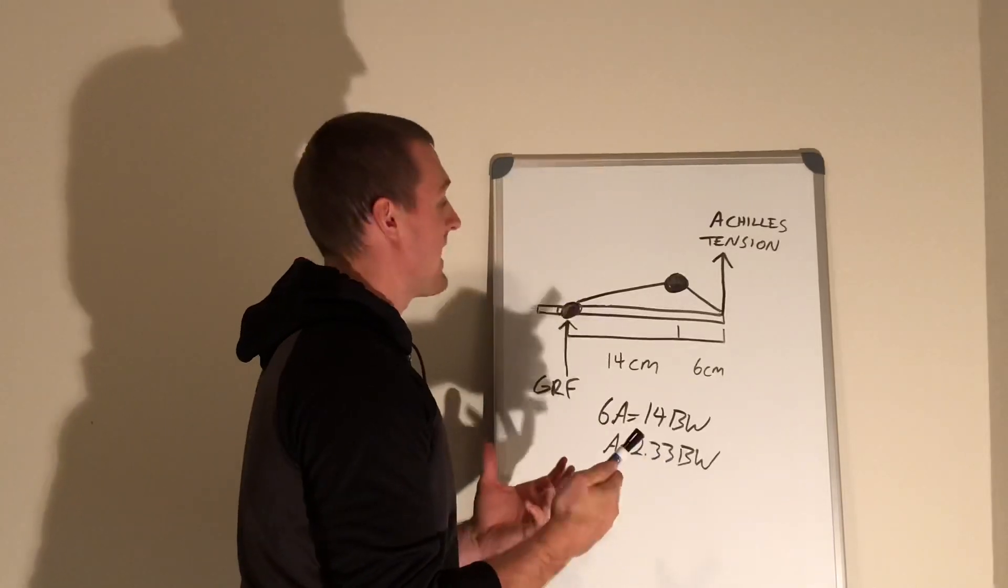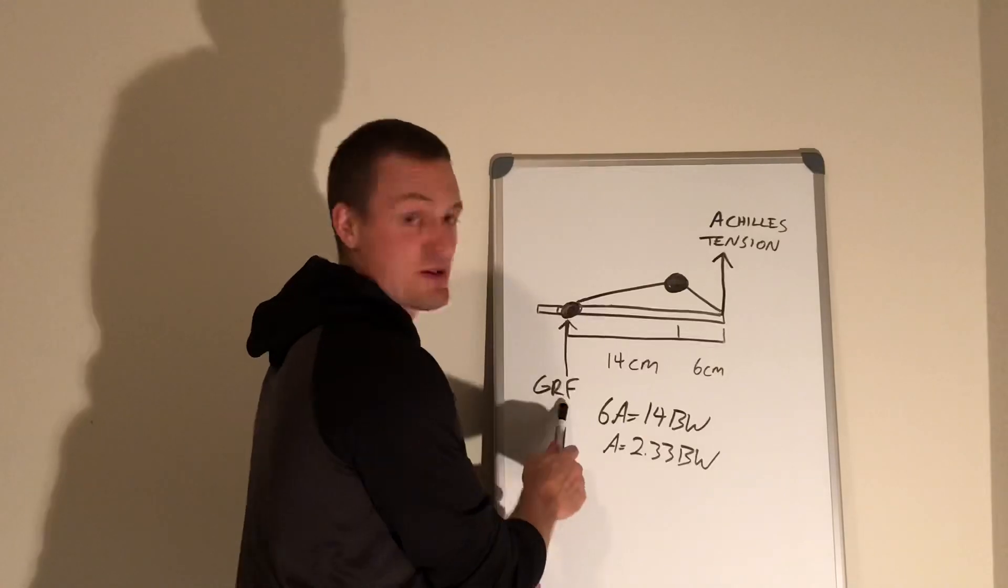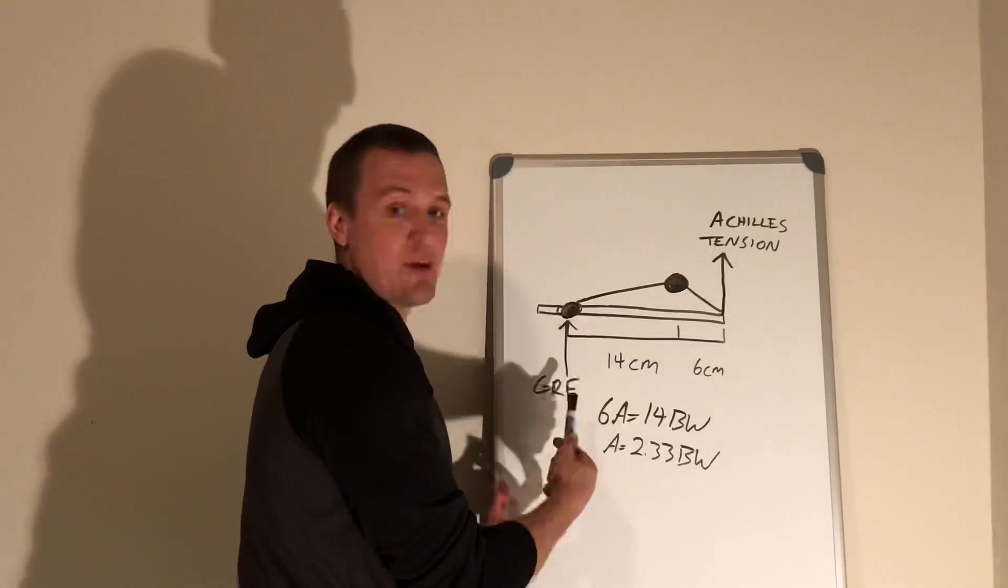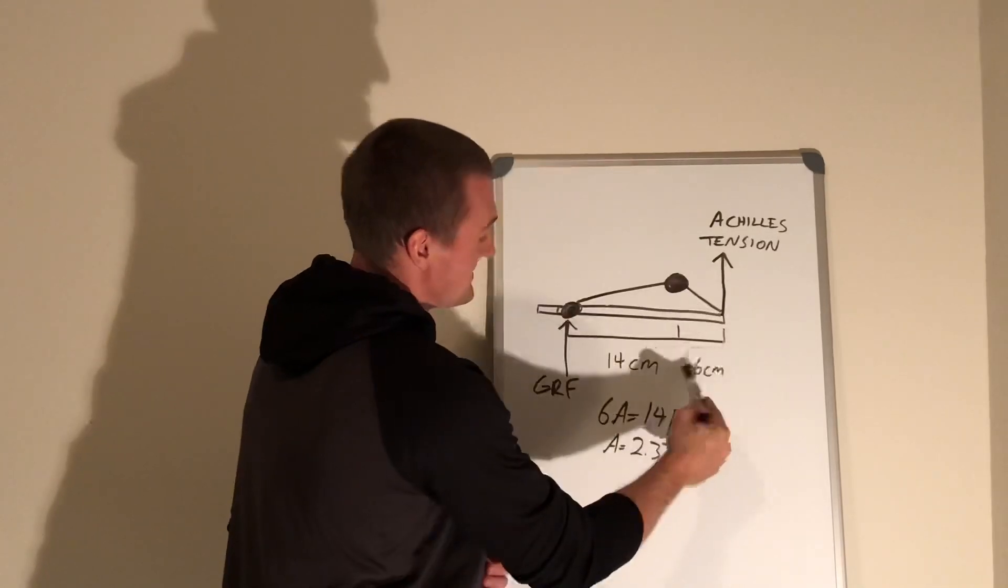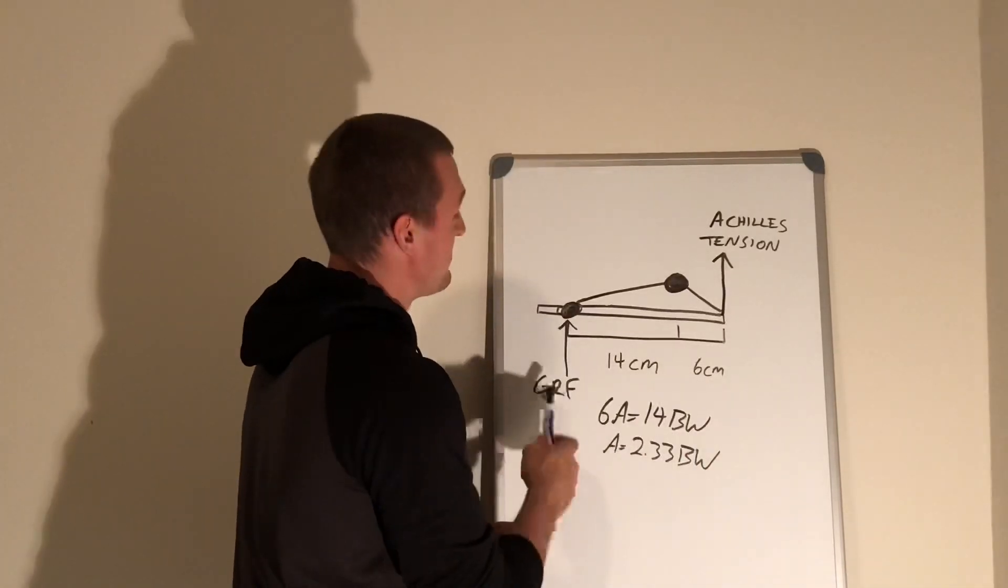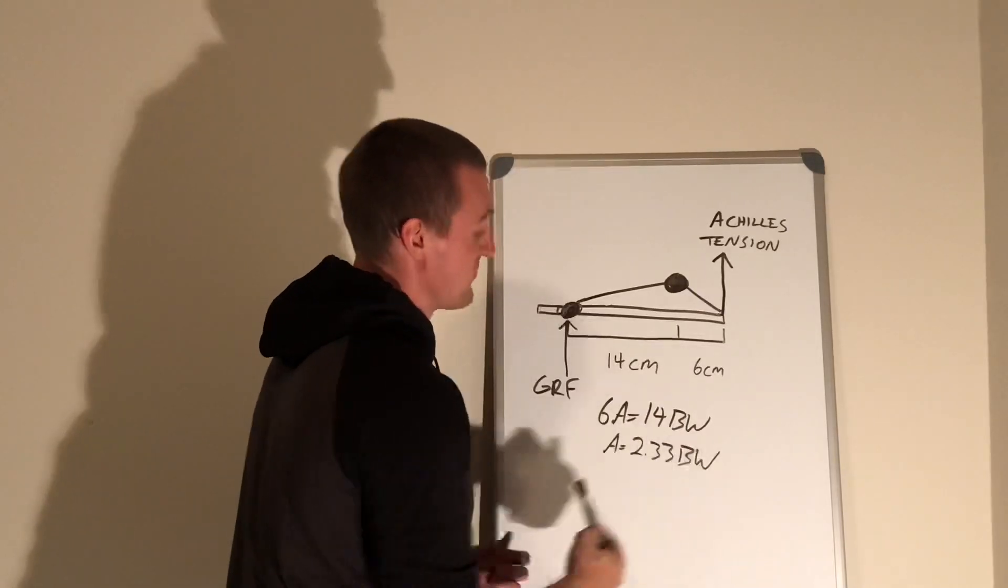If we were to do the equation, we end up with the same thing. Ground reaction force in an isometric hold is going to be equal to body weight. So it would just simply be Achilles tension times its moment arm 6 equals body weight times its moment arm 14. So we get our same answer for Achilles force.